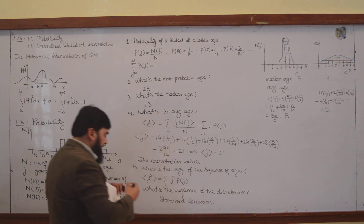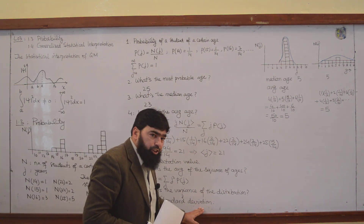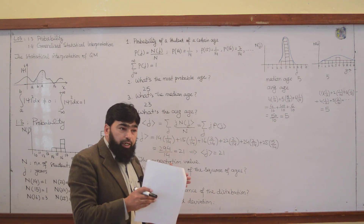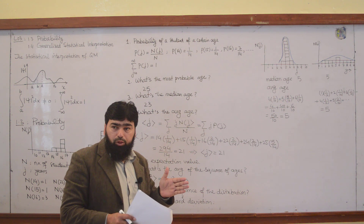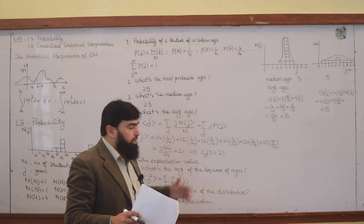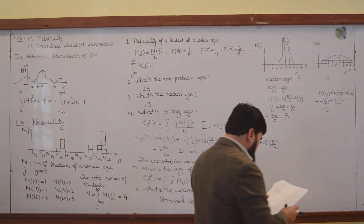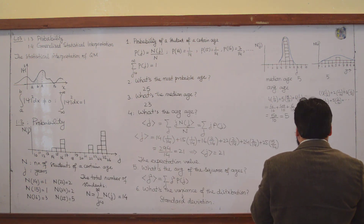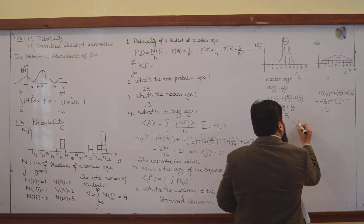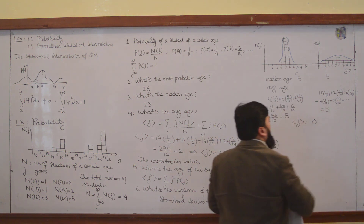So when we find the standard deviation for a quantum mechanical property, it tells us how much spread there is from the average value — how much spread is there on one side and on the other side of the average value J. The standard deviation is represented by sigma.